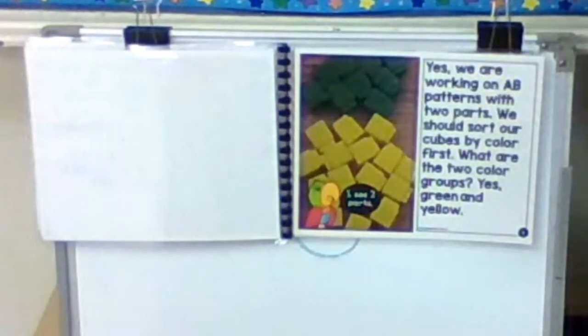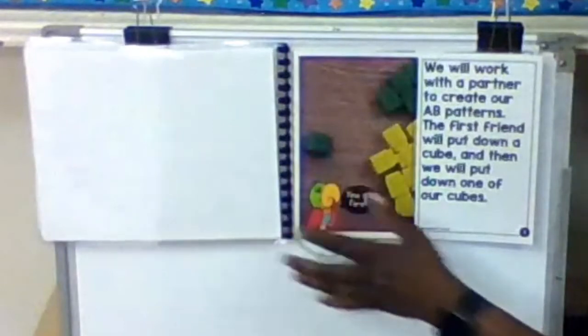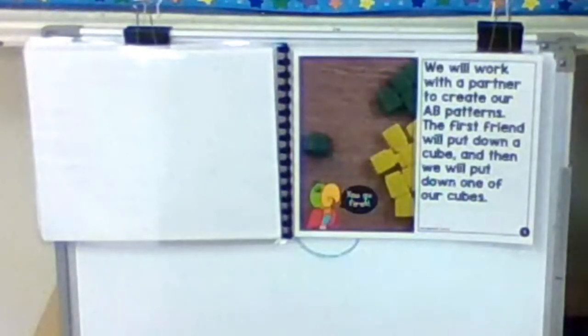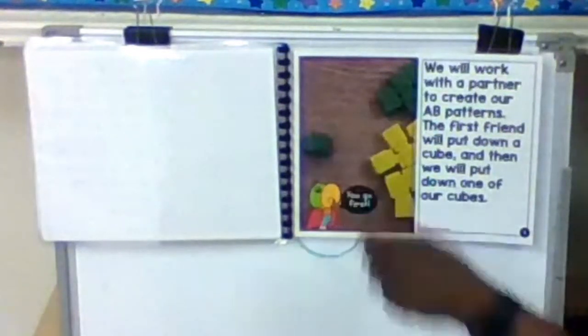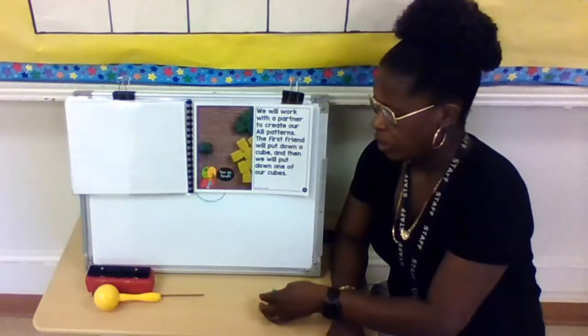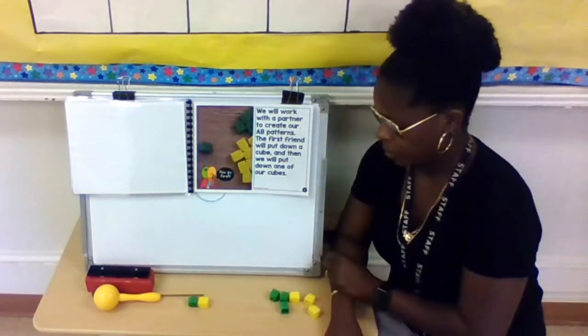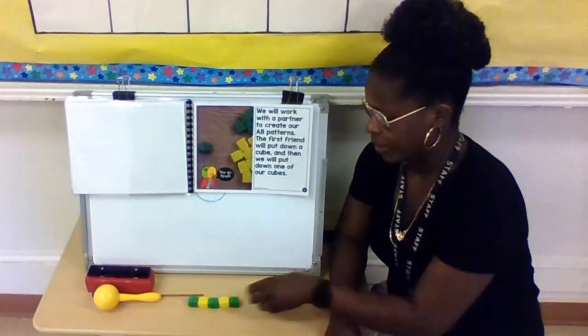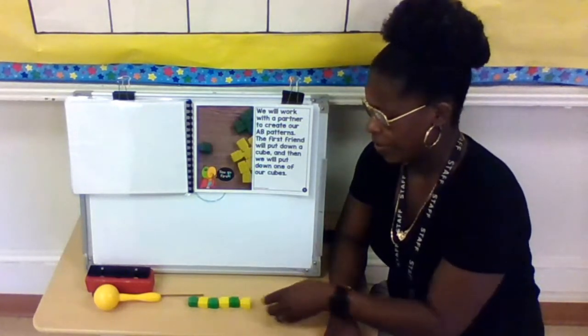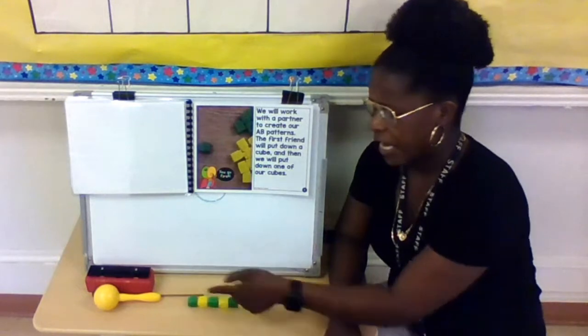Yes, we are working on A, B patterns with two parts. We should sort our cubes by color first. We did that. What are the two color groups? Yes, green and yellow. We will work with a partner to create our A, B patterns. The first frame will put down a cube. Then we will put down one of the other cubes. So as you can see right here is the green. So it's A, B and you just start with the green. You guys know how to do this. What comes next? Right, yellow. What comes next? Green. What comes next? Yellow. What comes next? Green. What's next? Green. And then you have red, yellow. So see, we made a pattern and it repeats itself.